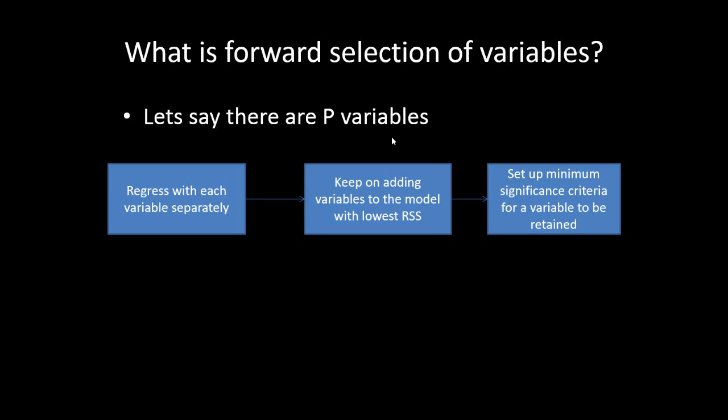We run the regression again and then select the next variable in the list based on the residual sum of squares — the one with the next lowest RSS. We first arrange variables in ascending order and then select one by one, also checking the significance level. We keep on adding variables to the model with the lowest RSS and then the next lowest and so on, and we set up a minimum significance criteria.